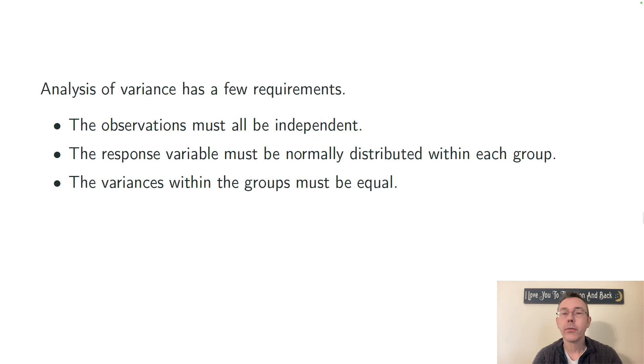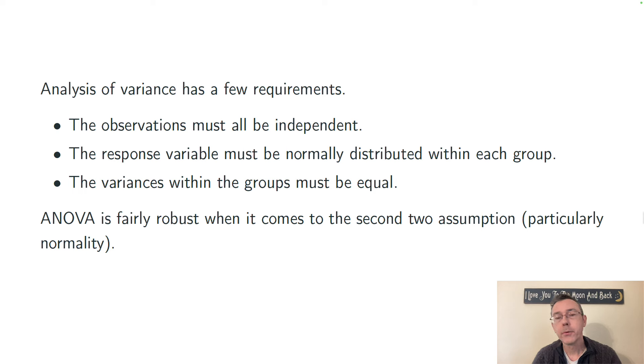Analysis of variance has three basic assumptions. First, all the observations have to be independent of one another. Another, the response variable must be normally distributed within each group in the larger population, and the variances within the groups all have to be equal in the larger population. Now, of these three, ANOVA is pretty robust against the second two assumptions as long as your sample size is reasonable, particularly normality. And this is all because the central limit theorem ends up kicking in. You don't have to worry about those two unless there's extreme departure from equal variances and from normal distributions within each group.